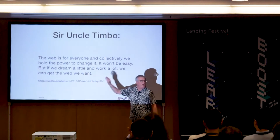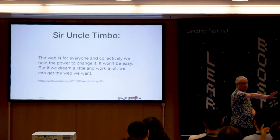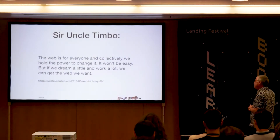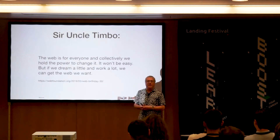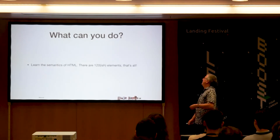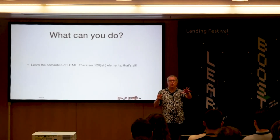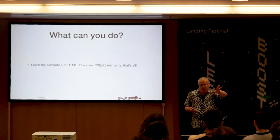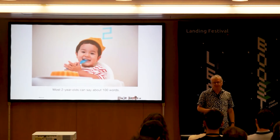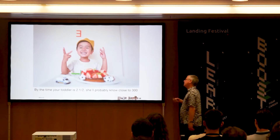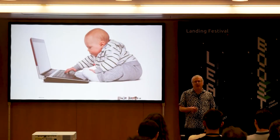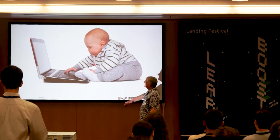Uncle Timbo said: 'The web is for everyone and collectively we hold the power to change it. It won't be easy, but if we dream a little and work a lot, we can get the web we want.' So what can you do? Learn the semantics of HTML — there are 120-ish elements, that's all. Many are old and deprecated and you'll never use them. Most two-year-olds can say 100 words; by the time your toddler is two and a half, she'll probably know close to 300 words. All I'm asking is that your HTML vocabulary be larger than a toddler's.